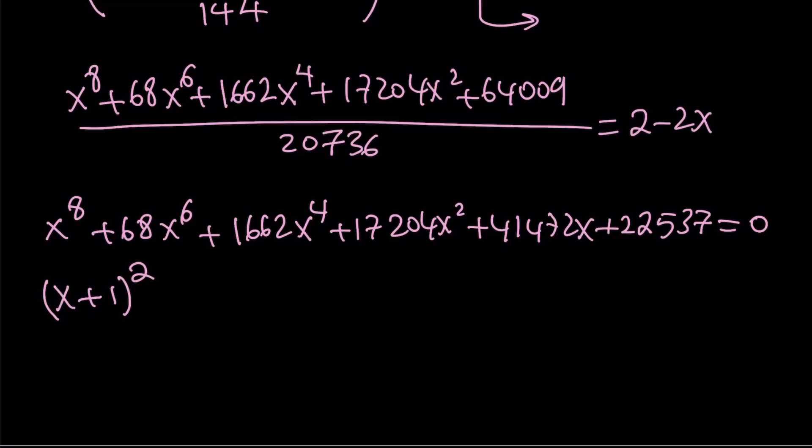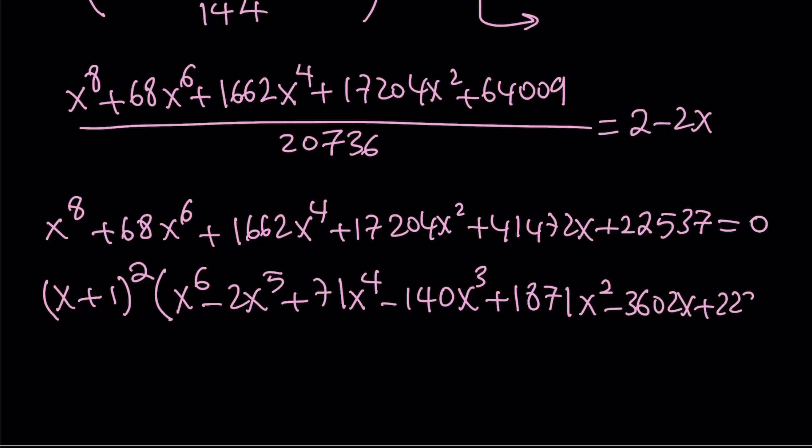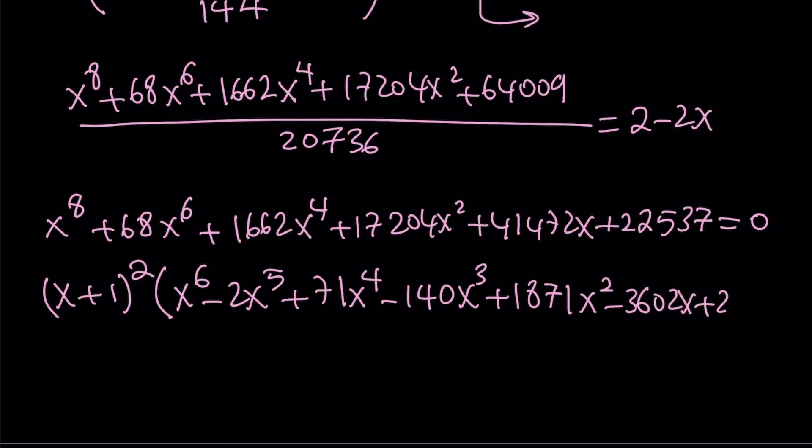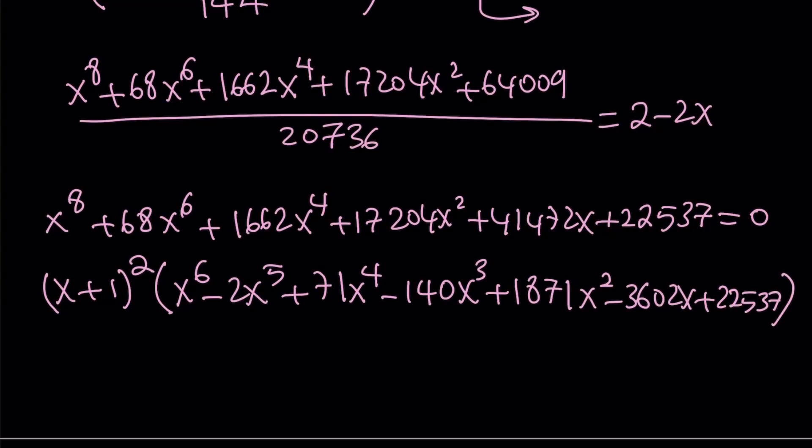In other words, this is what you get from here. Again, if I'm not mistaken, you should be getting x plus 1 quantity squared multiplied by x to the 6th power minus 2x to the 5th power plus 71x to the 4th power minus 140x to the 3rd power plus 1,871x squared minus 3,602x plus 22,537. And this whole thing is going to equal 0.